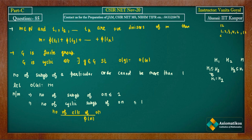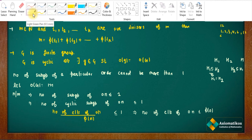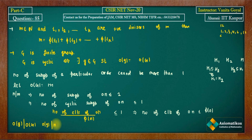So number of elements of order n is ≤ φ(n). By Lagrange's theorem, the order of any element divides the order of G. So every element's order divides m, meaning the order of each element is one of the positive divisors a1, a2, ..., aR of m.